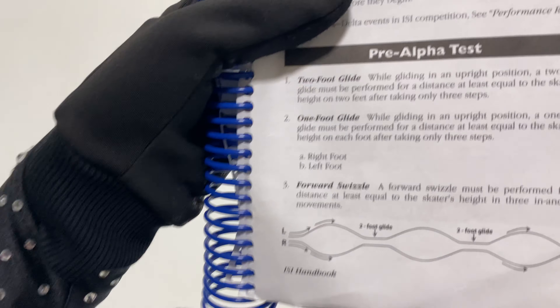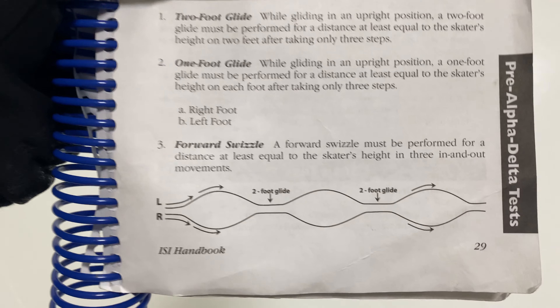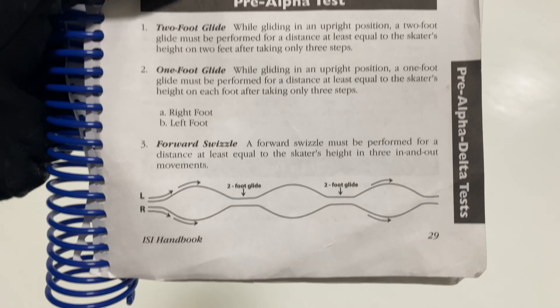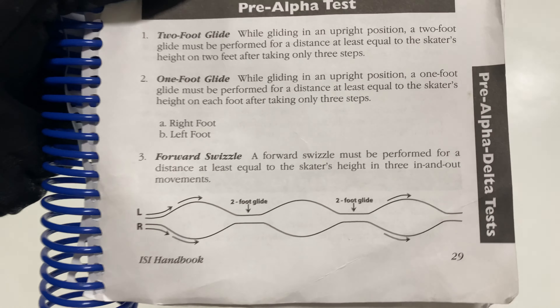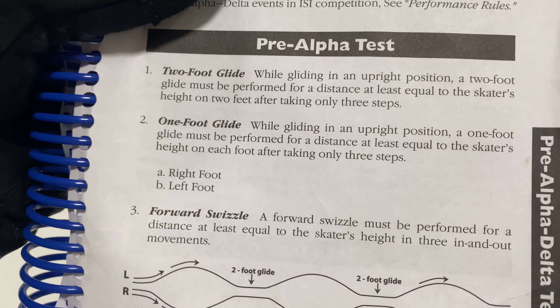Now I will show you a one-foot glide. We are getting in an upright position where a one-foot glide will be performed for a distance based on the skater's height on two feet after taking away three steps.